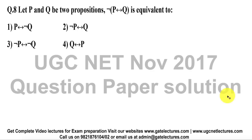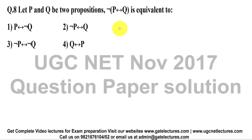Let us look at this question. It is a very easy question and there is a very shortcut way of solving this problem, but in this video my intention is to give you the complete explanation. It takes hardly five seconds to solve this problem because this is a direct question from the Kenneth H. Rosen book. We have P double implication Q and we have to take a negation of this.